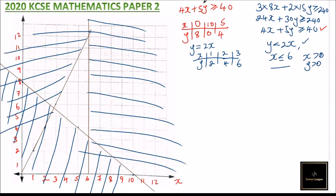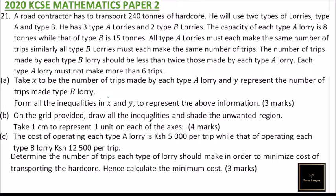We go back to part C of the question. The cost of operating each type A lorry is 5,000 per trip, while that of type B is 12,500 per trip. We need to determine the number of trips each type of lorry should make to minimize the total cost of transporting the hardcore, and then calculate the minimum cost.